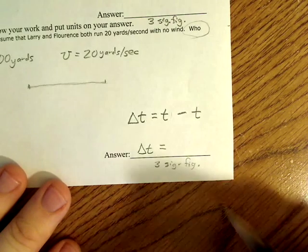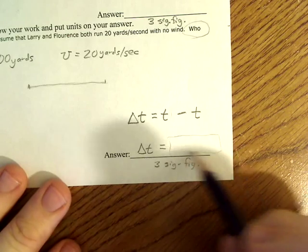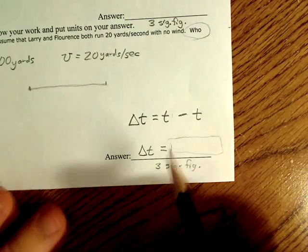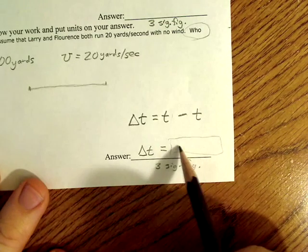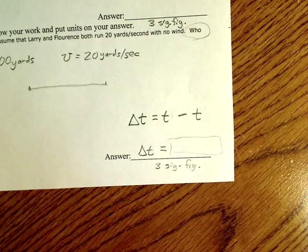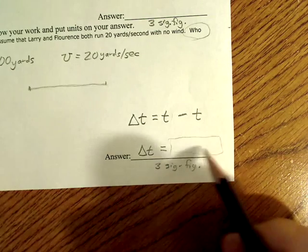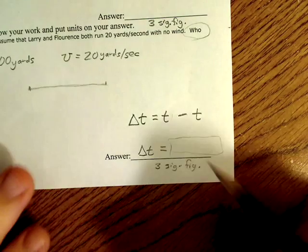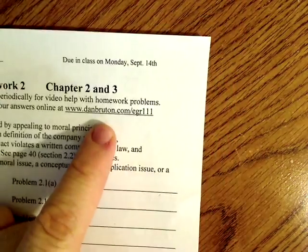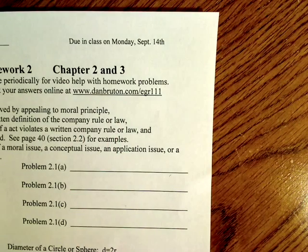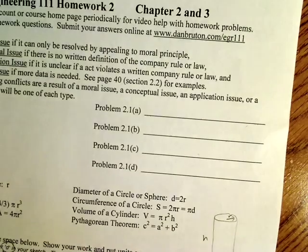Now, make sure that you put your answers here in three significant figures. And when you enter these solutions online, don't include that part right there. Just include units plus the answer. Units plus the answer, rather. So take this answer, each one of these answers that you have here and go over here to danbruton.com engineering 111 and submit your answers there. Hope that helps.